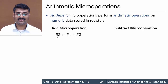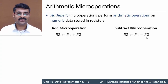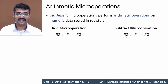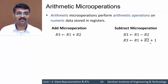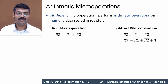Next we have the subtract operation: r3 = r1 - r2, meaning the content of r2 is subtracted from r1 and the result is stored in r3. As per the binary number system in digital electronics, r1 minus r2 can also be represented in 2's complement form, so it becomes r3 = r1 + r2' + 1, where r2' + 1 is the 2's complement of the number. So the subtract micro operation can also be performed using the add micro operation.